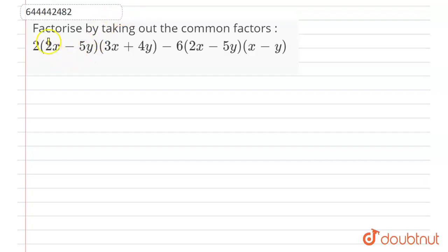Hello students, the question is factorize by taking out the common factors, and the equation is 2(2x - 5y)(3x + 4y) - 6(2x - 5y)(x - y). We have to factorize this equation by taking the common factors.